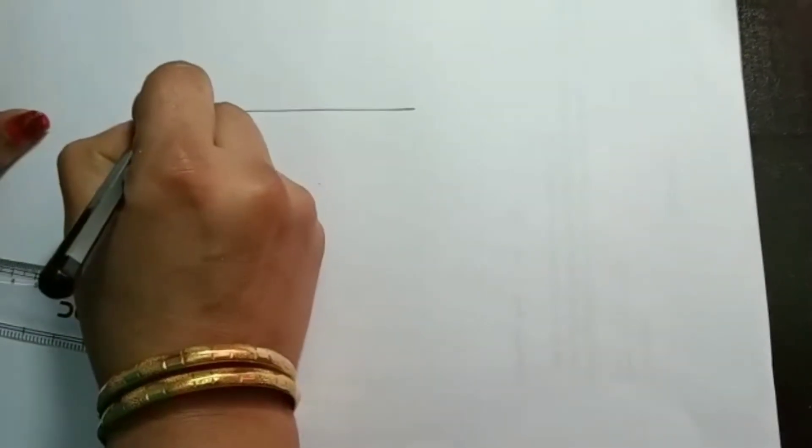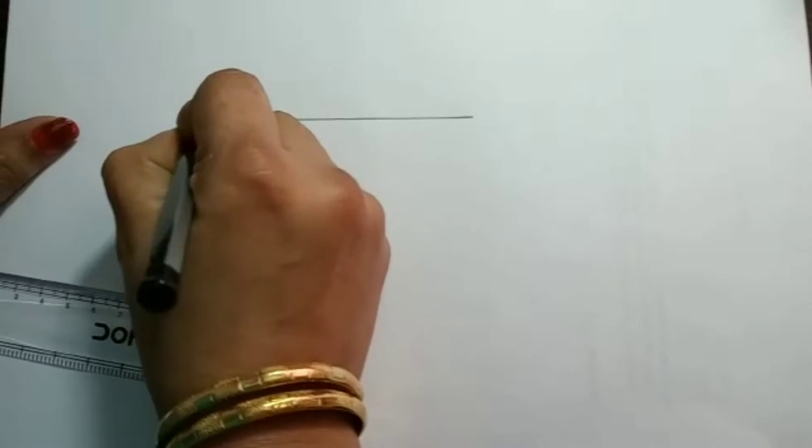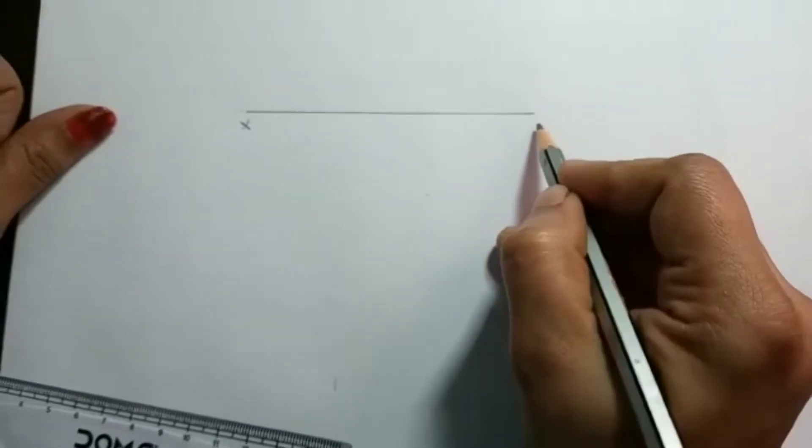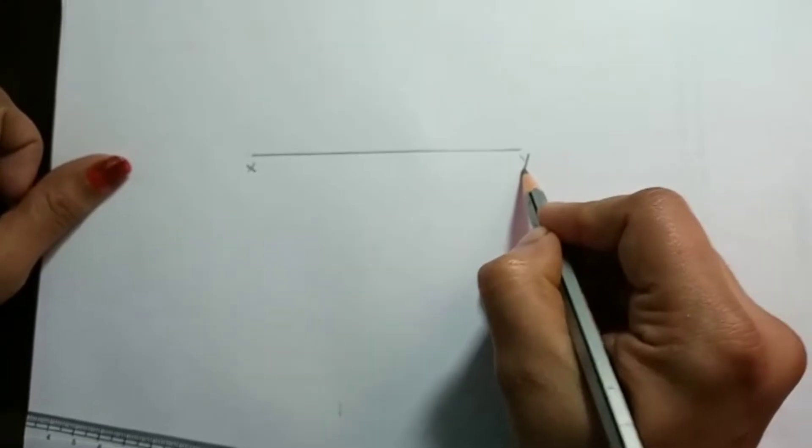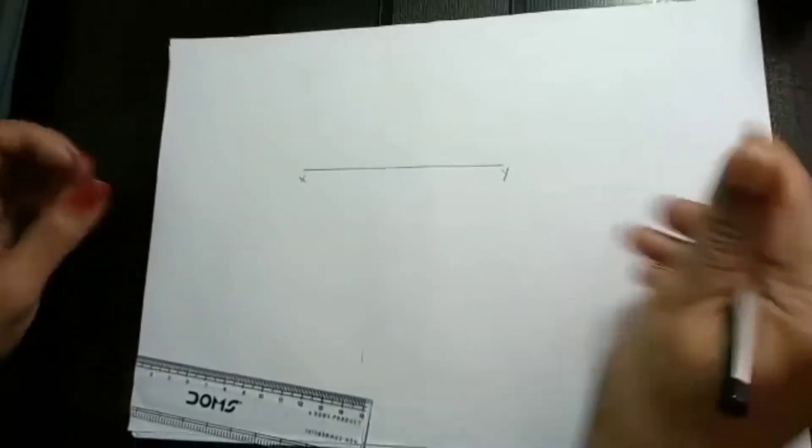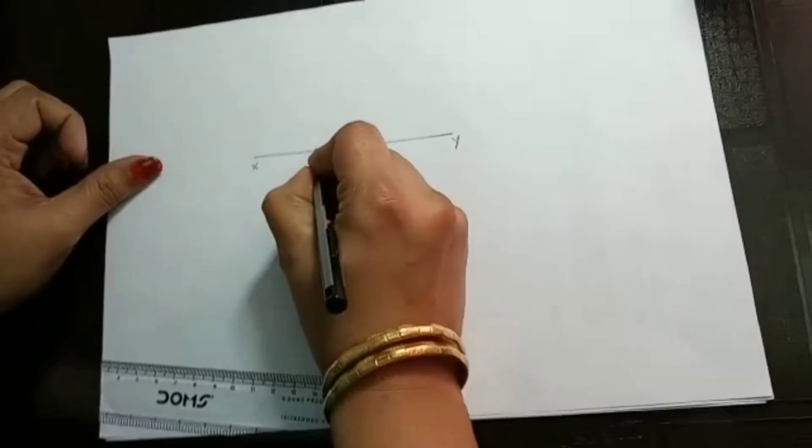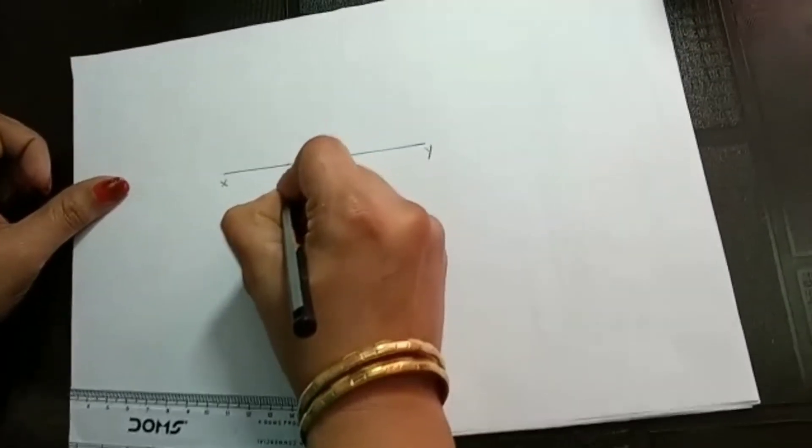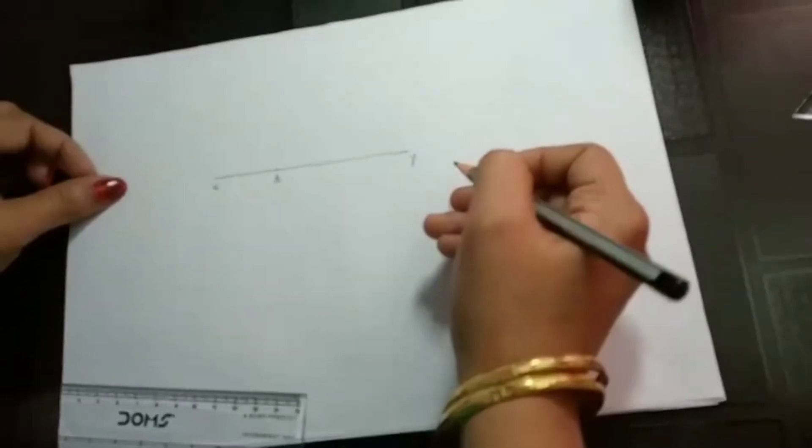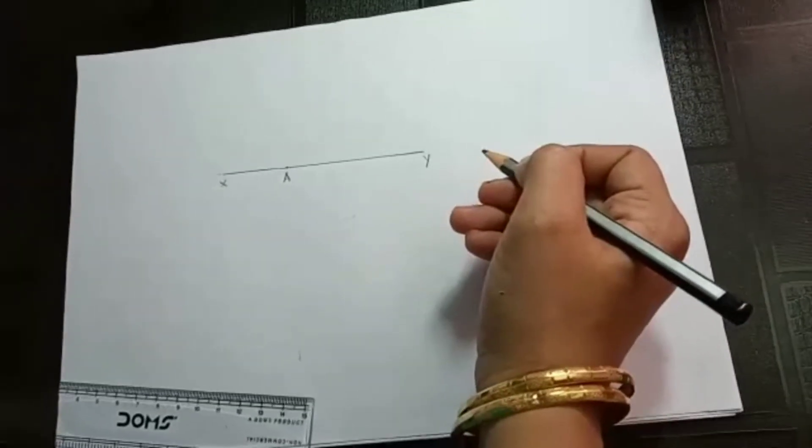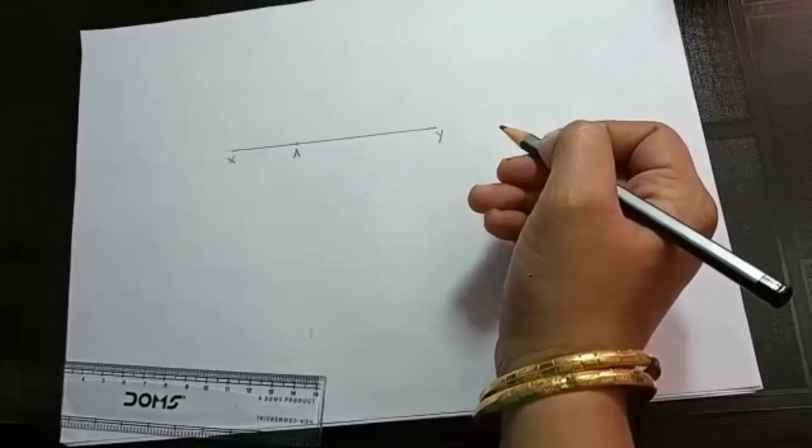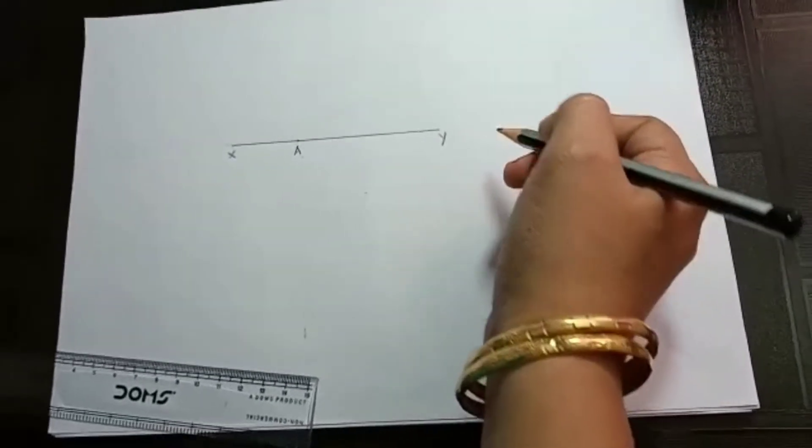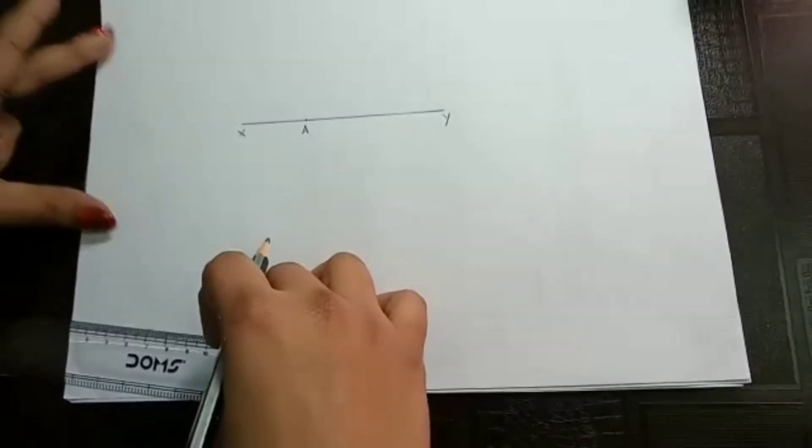So this side, this point I am just marking as X and here this point I am marking as Y. So next is, just take any random point and mark A. And in the question it is given that AB is equal to 2.5 cm. So that is the length given in the question.